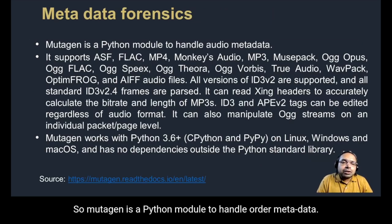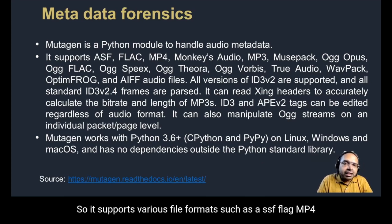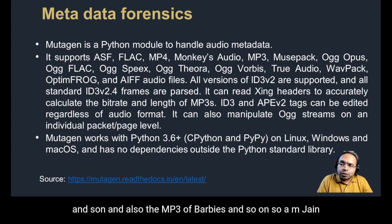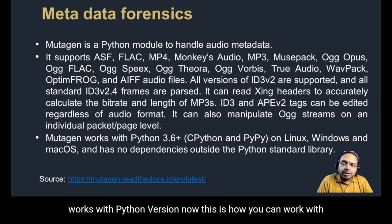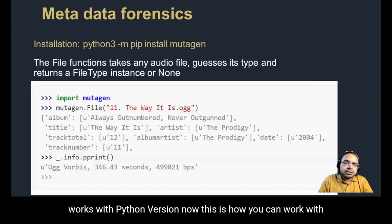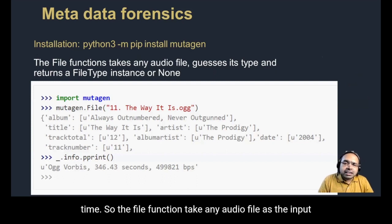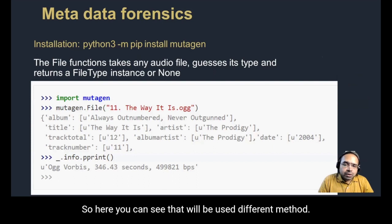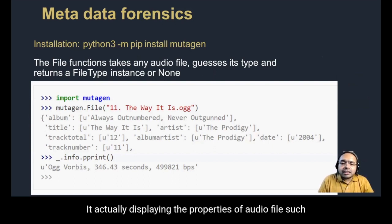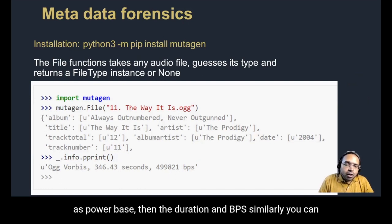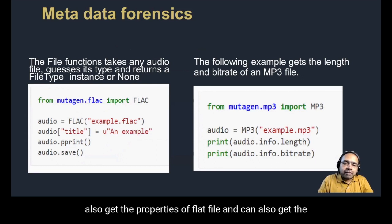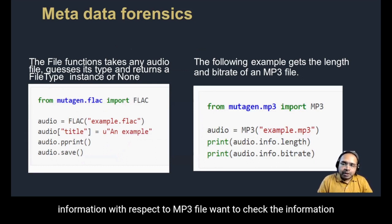For metadata forensics, Mutagen is a Python module to handle audio metadata. It supports various file formats such as ASF, FLAC, MP4, MP3, Ogg Vorbis, and others. Mutagen works with Python 3.6. The File function takes any audio file as input, tries to guess its type, and returns the file type instance. Using the pprint method, it displays properties of the audio file such as Ogg Vorbis format, duration, and bits per second. Similarly, you can get properties of FLAC and MP3 files.